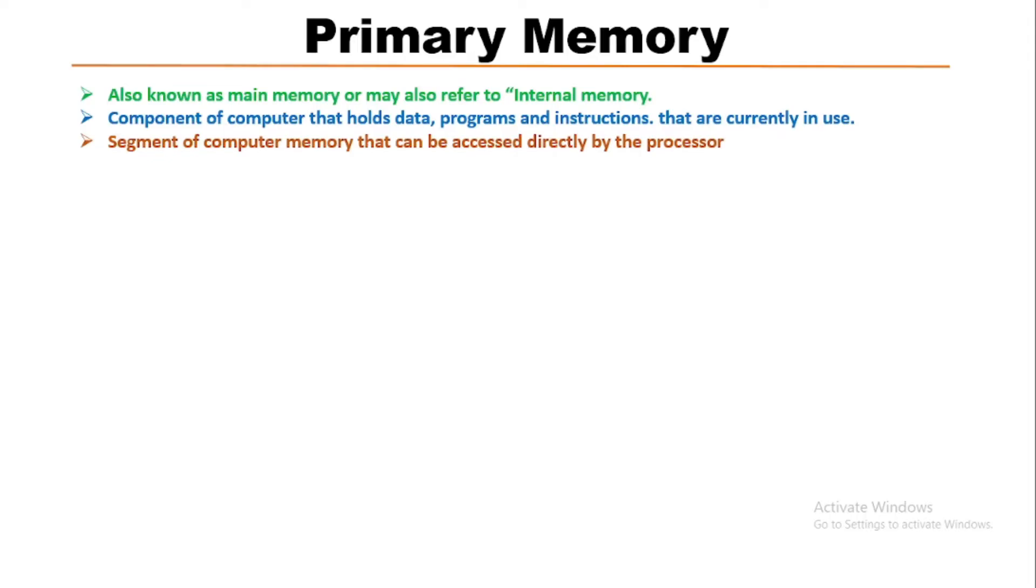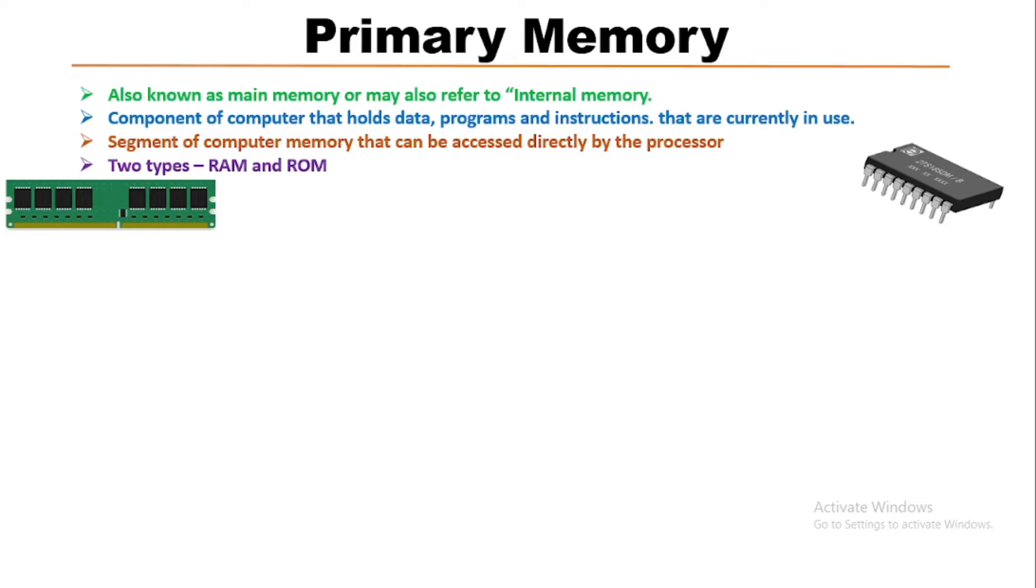It's mainly two types: RAM and ROM. On the left side is the picture of RAM, and on the right side is the picture of ROM.